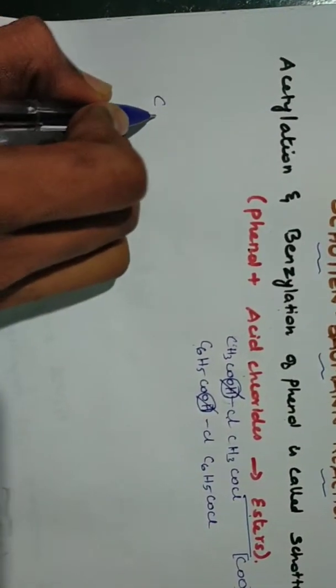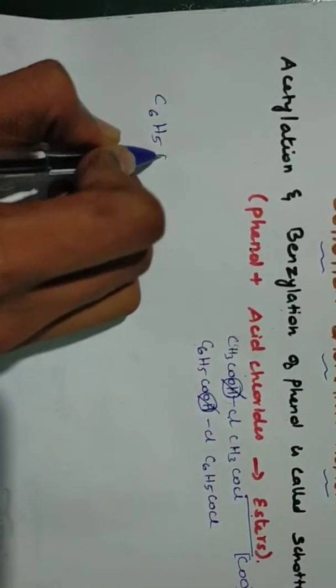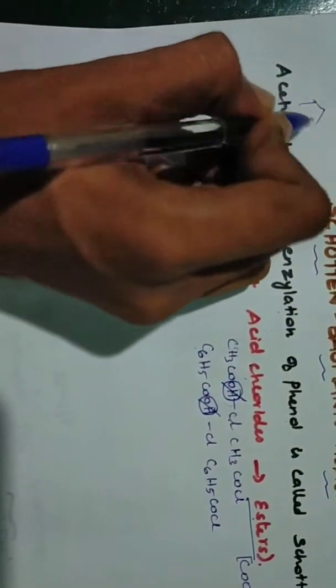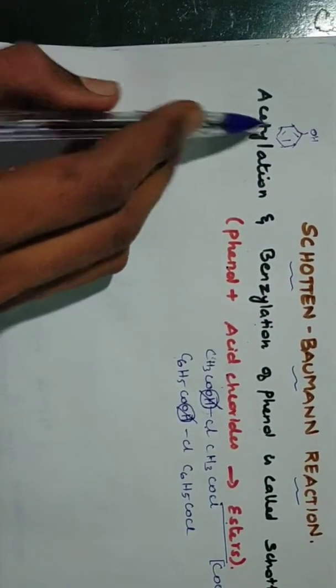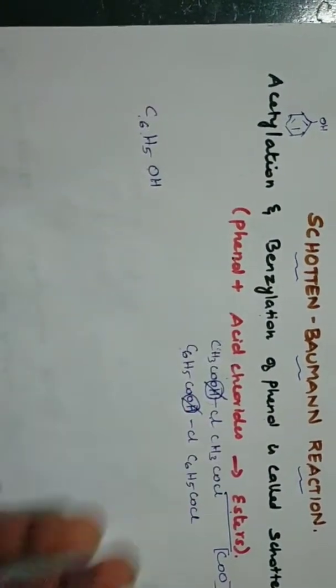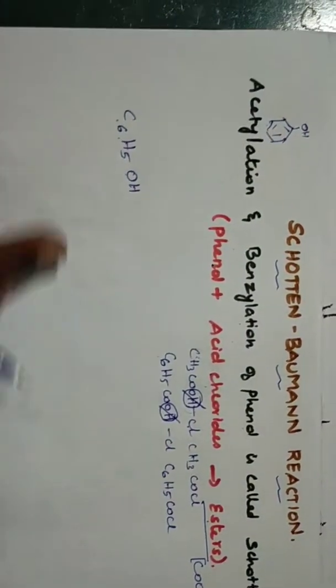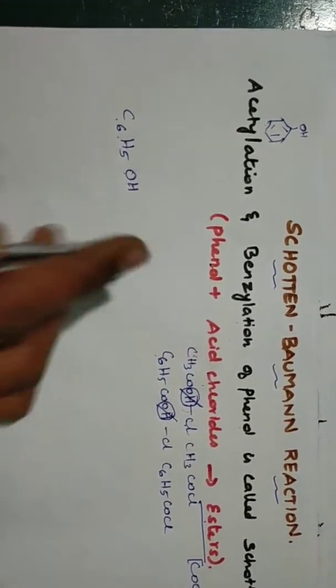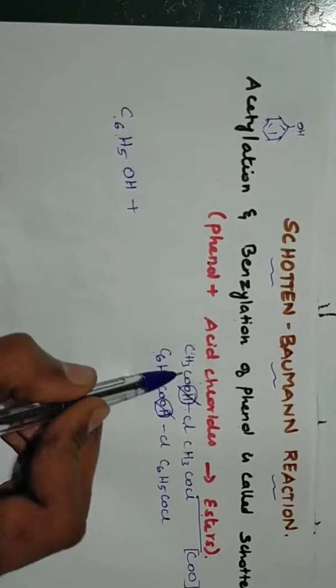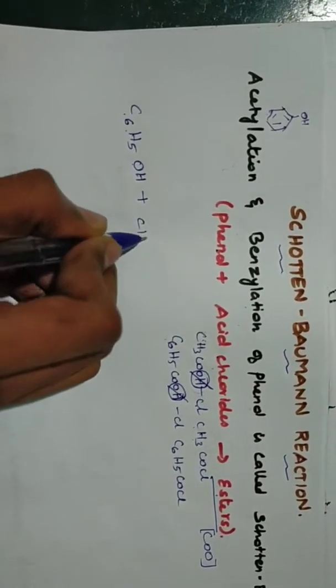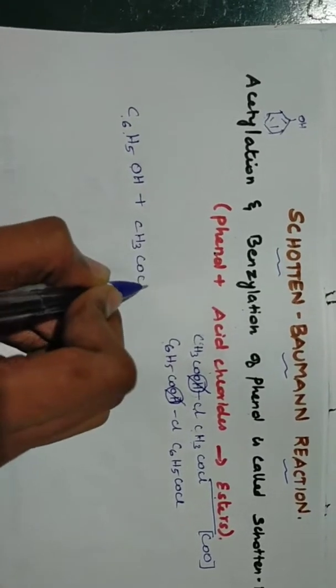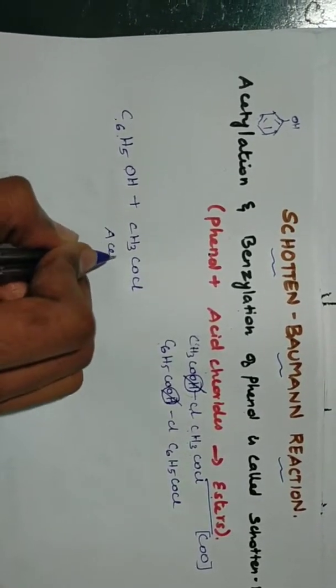First phenol is C6H5OH. If we look at structure, this is the phenol. So phenol is like C6H5OH. This we discussed in the previous videos. So C6H5OH phenol plus acid chloride. First what is the acid chloride? CH3COCl. What is this? This is acetyl chloride.